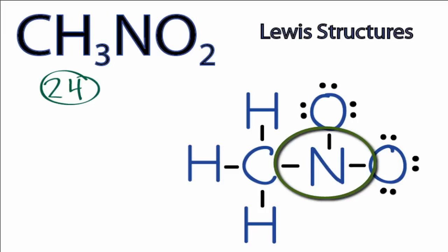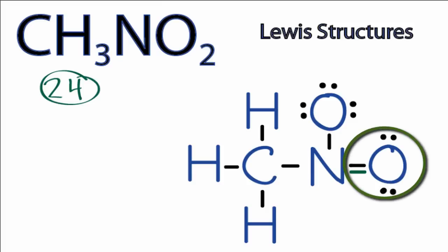So what we'll have to do is share valence electrons from one of the oxygens. Let's take this pair right here and use that to form a bond here. So by forming that double bond, the oxygen still has eight valence electrons, but now the nitrogen has eight valence electrons as well, and we're only using 24 valence electrons for the total CH3NO2 molecule.